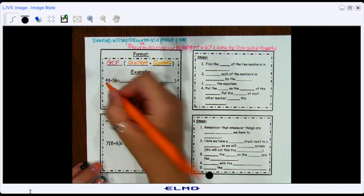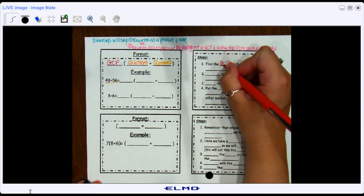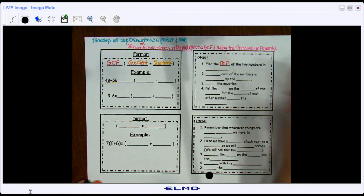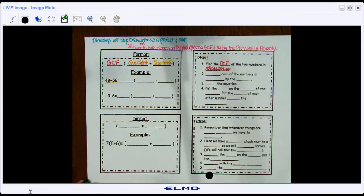Let's go ahead and get started. The very first thing we want to do is to find the GCF of those two numbers. And if yours has a line right here, just go ahead and cross that off. We don't need that. You're just going to find the GCF of the two numbers.